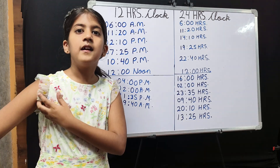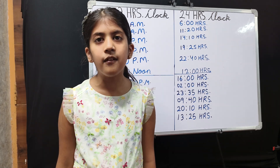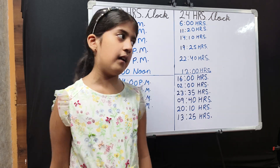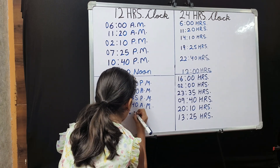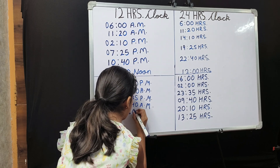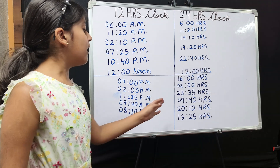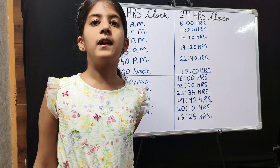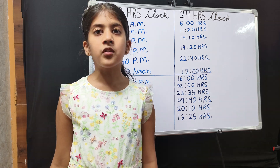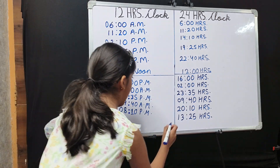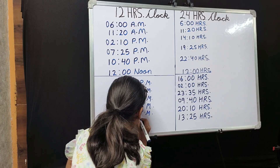2010 hours. In 2010 hours, 20 is the hours from which we can minus 12. So 20 minus 12 is 8, and I will write 10 as it is. My answer is 8:10 PM. 1325 hours. In 1325 hours, 13 is the hours from which we can minus 12. So 13 minus 12 is 1, and I will write 25 as it is. My answer is 1:25 PM.